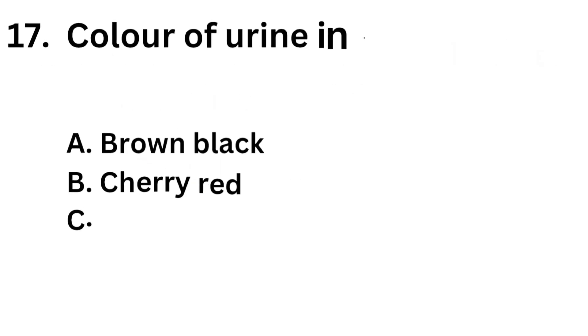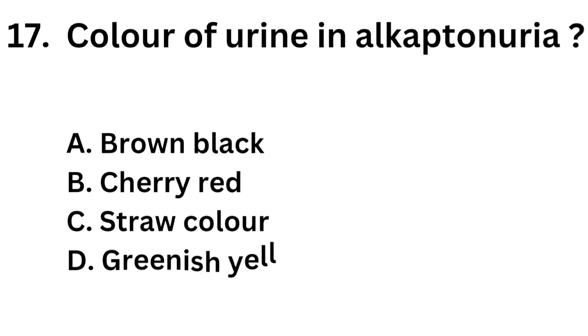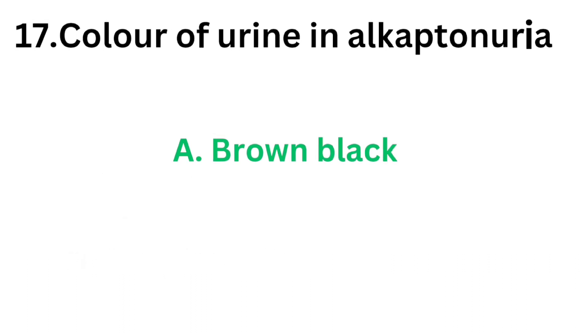Question number 17: Color of urine in alkaptonuria. Option A: Brown black. Option B: Cherry red. Option C: Straw color. Option D: Greenish yellow. The correct answer is Option A: Brown black. The color of urine in alkaptonuria is brown/dark black due to the presence of homogentisic acid.